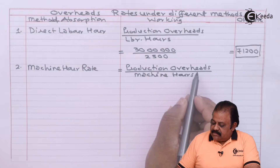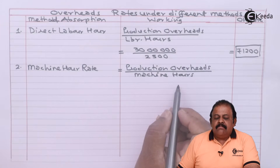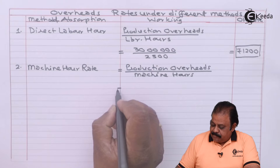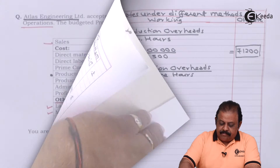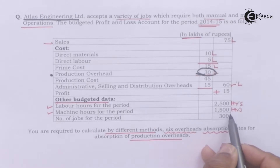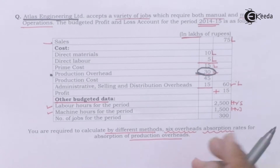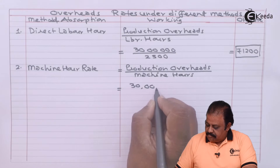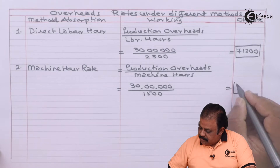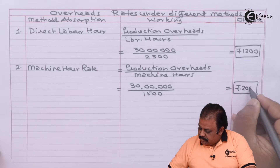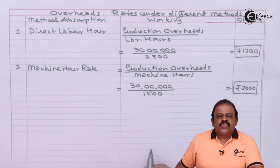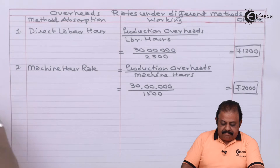Next, the machine hour rate: production overheads divided by machine hours. Production overheads 30 lakhs divided by machine hours 1,500 gives a machine hour rate of rupees 2,000 per hour.